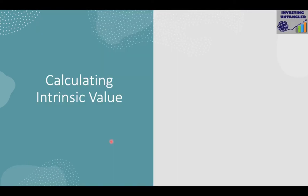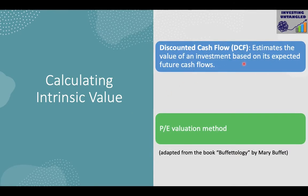Moving on to calculating the intrinsic value or fair price of a stock. The most common method is the Discounted Cash Flow model, or DCF model. It estimates the value of an investment based on its expected future returns. The calculation involves a projected estimate of future growth and cash flows, which are then discounted to present value to see what those future cash flows look like in today's money. You can also find pre-calculated DCF values online.